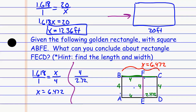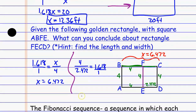I'm going to plug 4 divided by 2.472 into my calculator and see if it gives me the golden ratio — 1.618 or close to it — keeping in mind this is a rounded approximation. When I plug that in, I get 1.6181229, which keeps going, but is very close and accurate. That's why we memorize the approximation to three decimal places. So I can conclude that rectangle FECD is a golden rectangle.